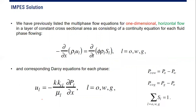We have previously listed the multi-phase flow equations for one-dimensional horizontal flow in a layer of constant cross-sectional area, consisting of a continuity equation for each fluid phase that is flowing. The index L can be oil, gas, or water, so we have this equation for each phase — oil, water, and gas — and we need to solve them simultaneously.